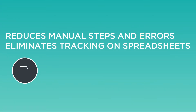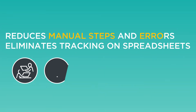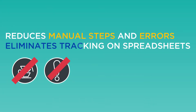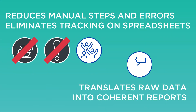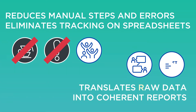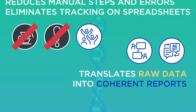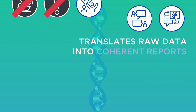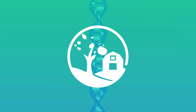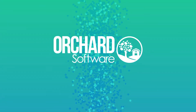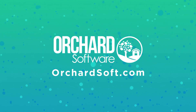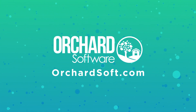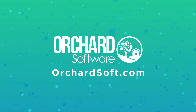As molecular testing continues to grow, having a LIMS that manages batch testing with a full audit trail is vital for laboratories. The LIMS reduces manual steps and paperwork to improve patient safety. It streamlines workflow communication and translates complex raw data into coherent reports. To learn more about a molecular LIMS, visit OrchardSoft.com.